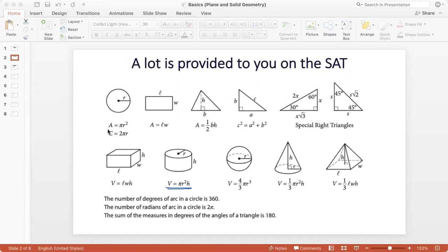A circle is given, a circle of radius r, its area pi r squared, and its circumference 2 pi r are mentioned here. A rectangle of length L and width W are given, and its area is given. We should also remember that the perimeter of a rectangle is two times the sum of length and width, so that's another formula to remember.